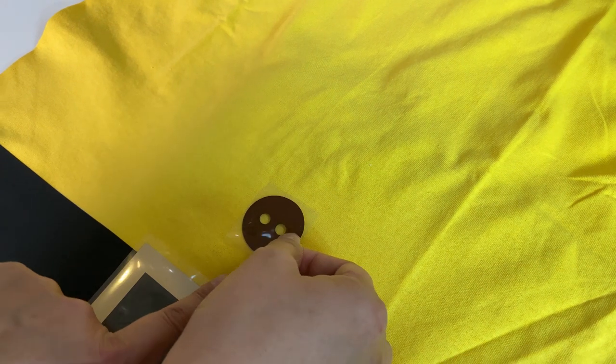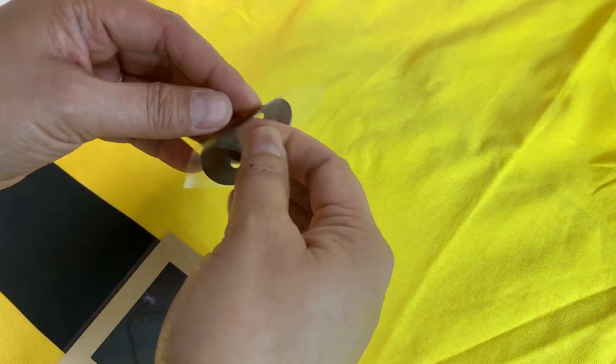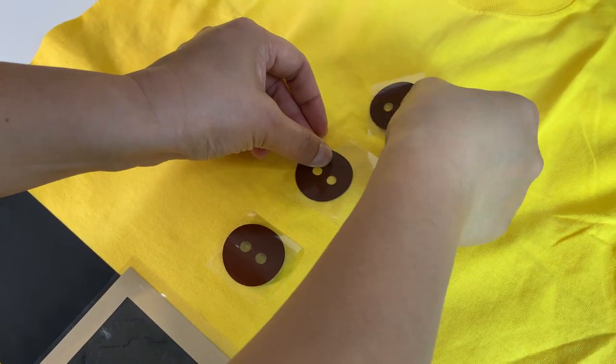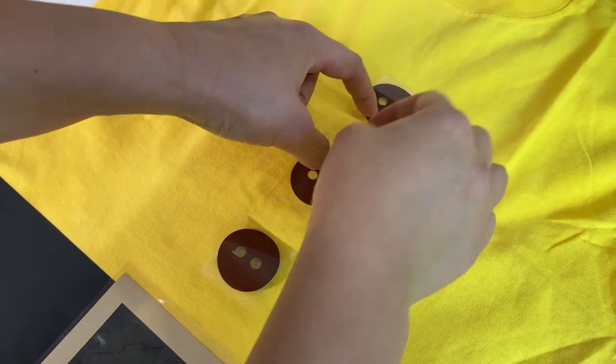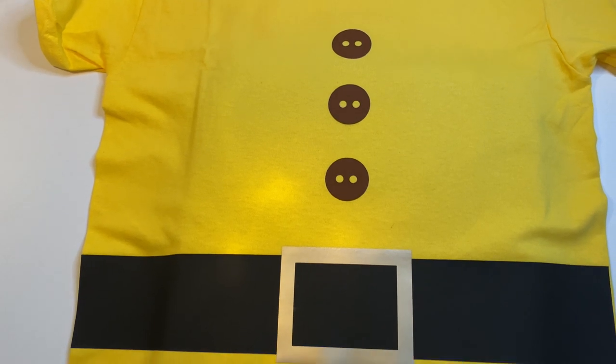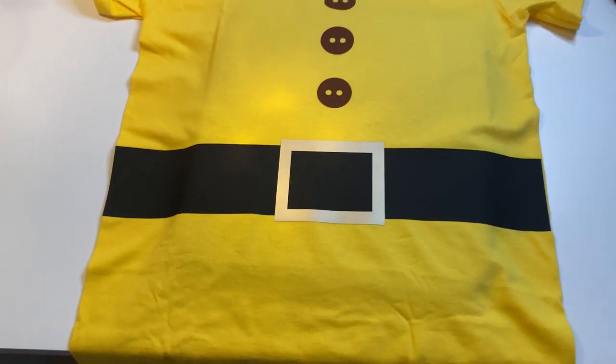I'll just place the buttons in the middle, maybe starting an inch above the buckle. Doc, I gave him or I'm giving him three buttons. Just make sure that the iron-on is on the mat. This is what the shirt looks like now with the buttons, the belt, and the buckle.